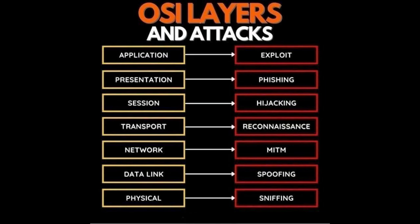The Network Layer is responsible for routing and addressing, and it includes network protocols like IP. Common attacks at this layer include IP sniffing, routing attacks, and Distributed Denial of Service — DoS attacks — that target network infrastructure.